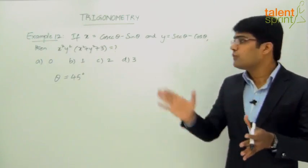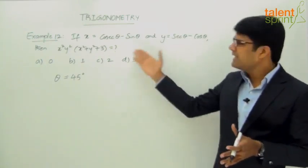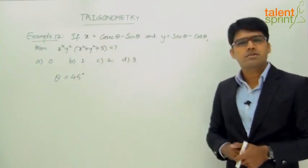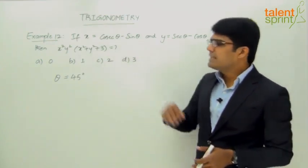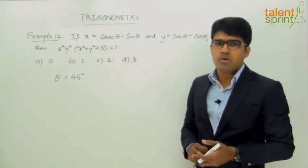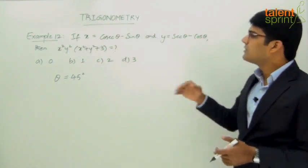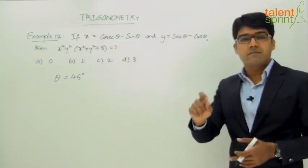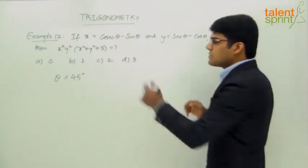Let us assume some value that gives us real numbers for x and y, then substitute in the given equation to get the required answer. I think θ = 45° should be okay because all these trigonometric ratios exist and give us real numbers for 45 degrees.